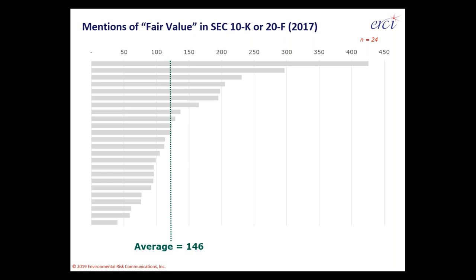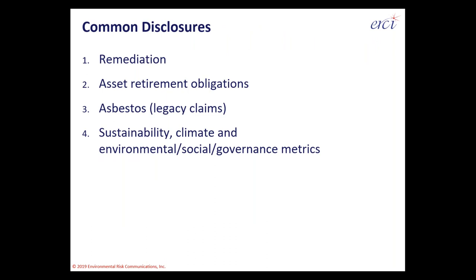FASB 157, which identified fair value measurement as a new part of GAAP, was put in place in September 2006, so it's been around for over 12 years. Applying it to environmental liabilities is more difficult. If you're interested in fair value measurement, there's a separate webinar on applying it to environmental liabilities on our YouTube page — an hour-long explanation of how to apply it and improve the quality of disclosures.